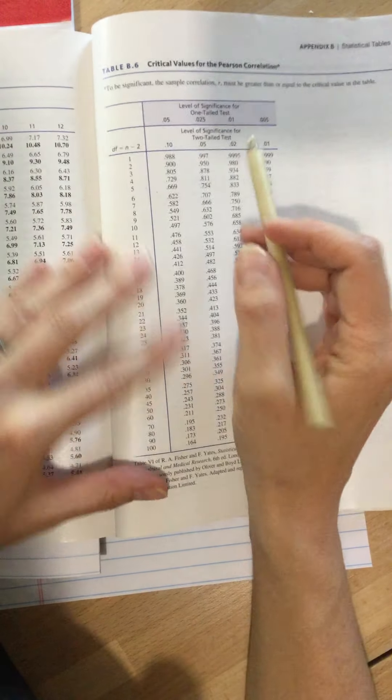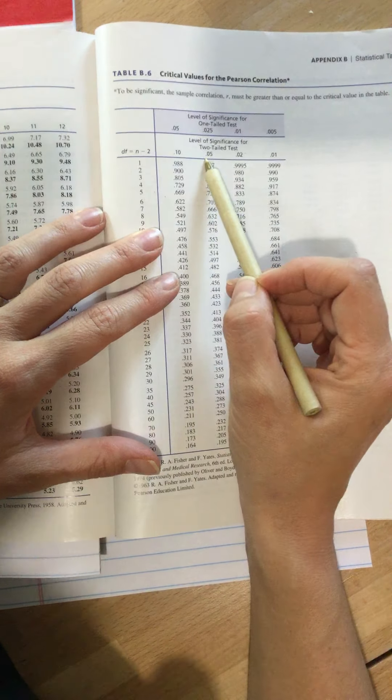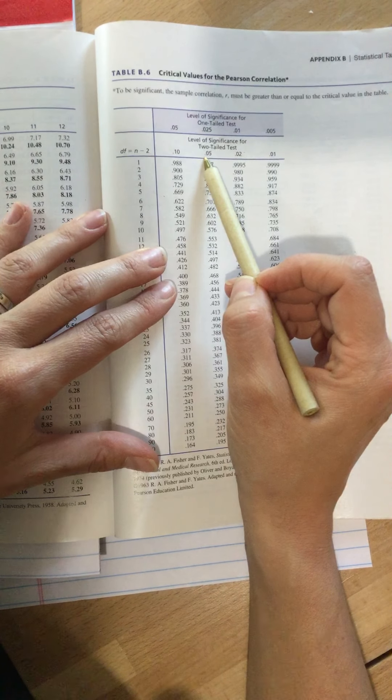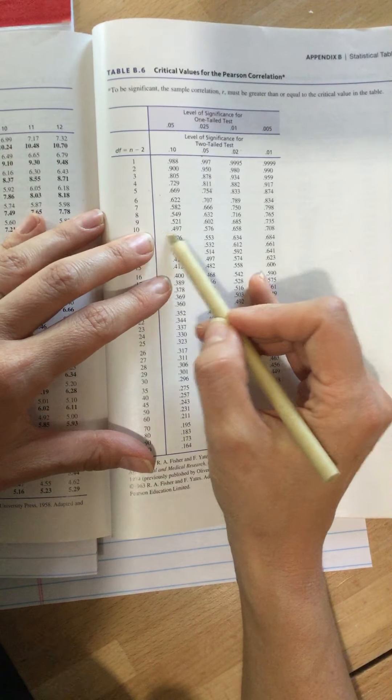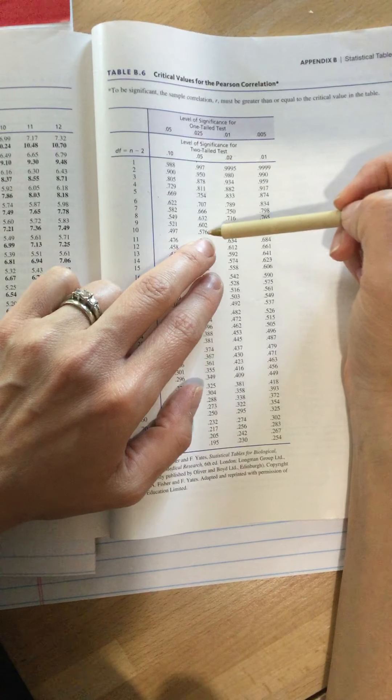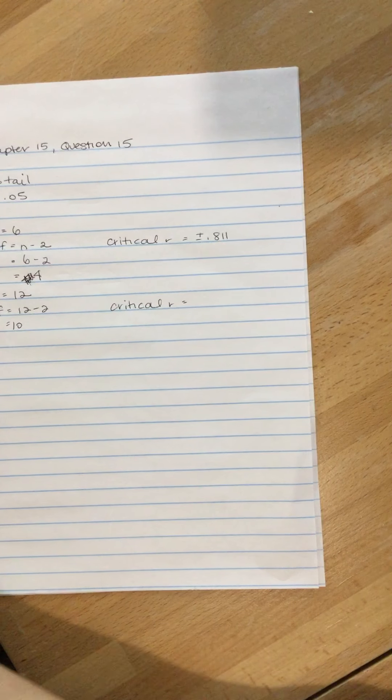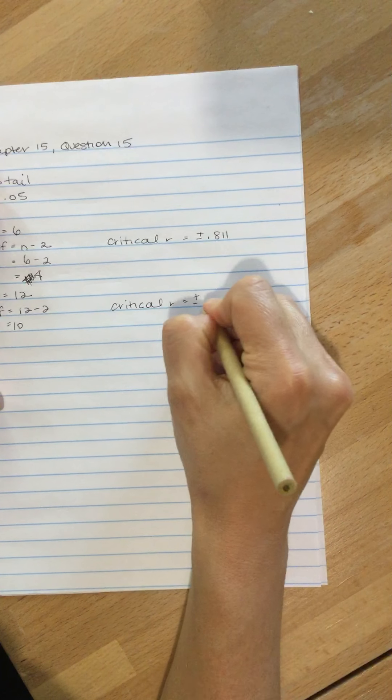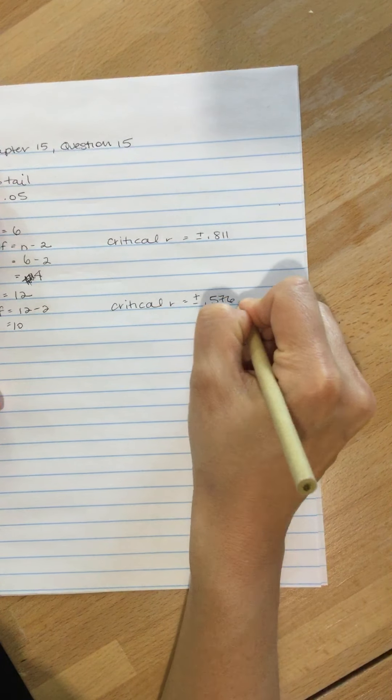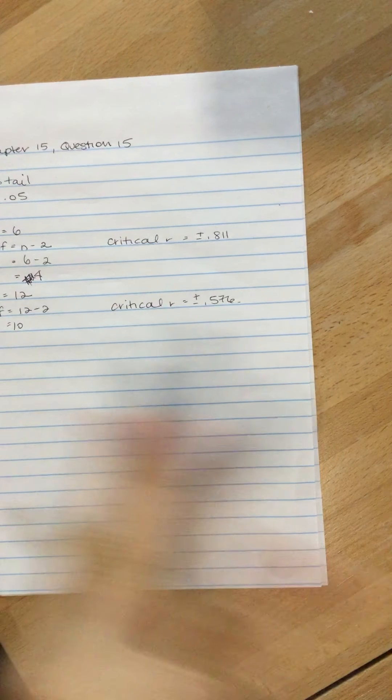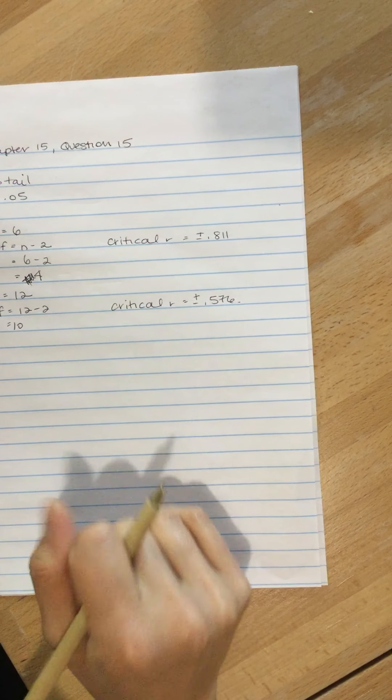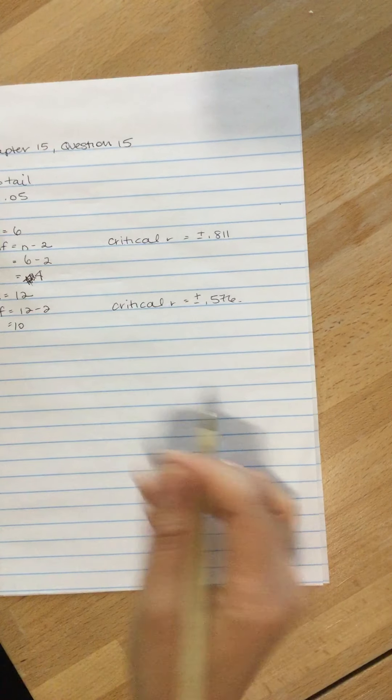Again, we're going to use level of significance, two-tailed test, 0.05. Now our degrees of freedom is 10, so we're going to go down to here. And that critical value is plus or minus 0.576. We need to be larger than 0.576, the absolute value of our calculation.